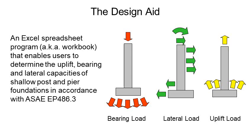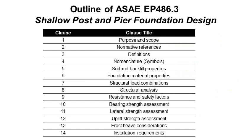The standard does have provisions that help you determine how the loads in a post or pier itself change with depth, but it does not have design checks to make sure that the post and pier foundation materials themselves will not fail. That is something you need to do using other design specifications. For example, if you had an embedded wood post, you would use the National Design Specifications for Wood Construction to determine if that wood post was sufficient to meet the loads applied to it.